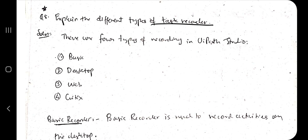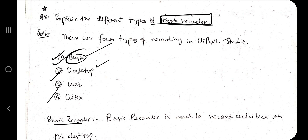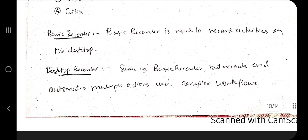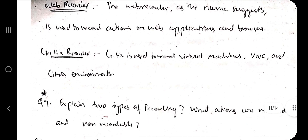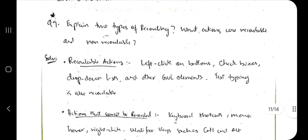The next super important question is: explain the different types of task recorders. There are four types. Basic: handles basic tasks like opening an app, writing something, and closing it — for example, Notepad. Desktop: for complex tasks such as handling two apps at a time. Web: for web-based tasks like opening YouTube, watching a video, and closing it. Citrix: used for virtual environments.